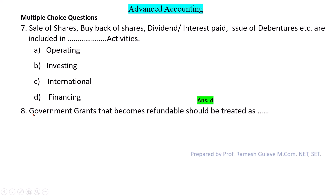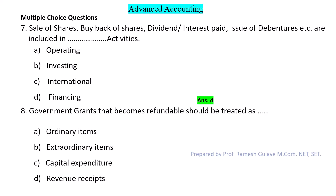Next question: Government grants that become refundable should be treated as what? This question is based on Accounting Standard 12. If a company received government grants and those grants become refundable, they are treated as extraordinary items. So the answer for question number 8 is option B: extraordinary items.